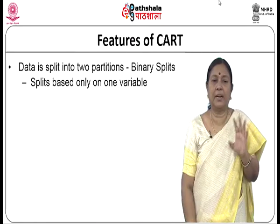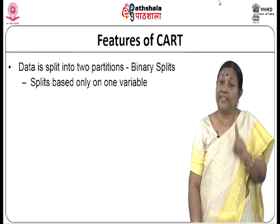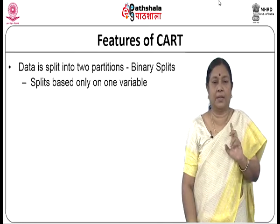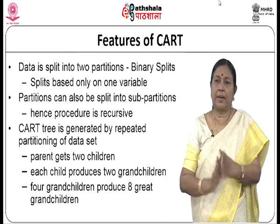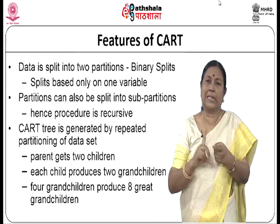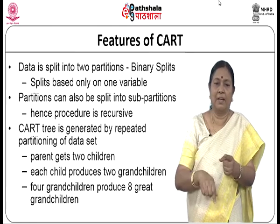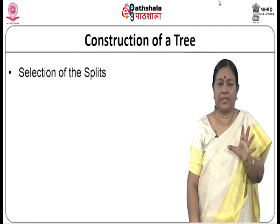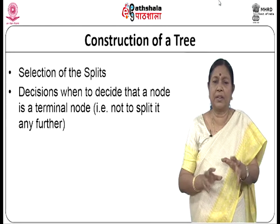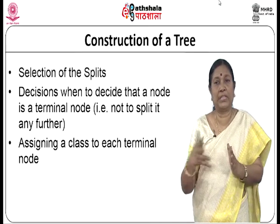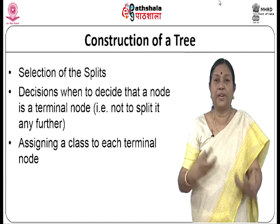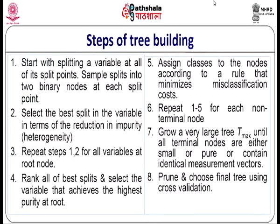Key features of CART: data is split into two partitions — binary split; splits are based on only one variable at a time; and partitions can be further split into sub-partitions, hence the procedure is called recursive. The CART tree is generated by recursive partitioning of the dataset. Parent gets two children, each child produces two grandchildren, four grandchildren produce eight great-grandchildren, and so on.